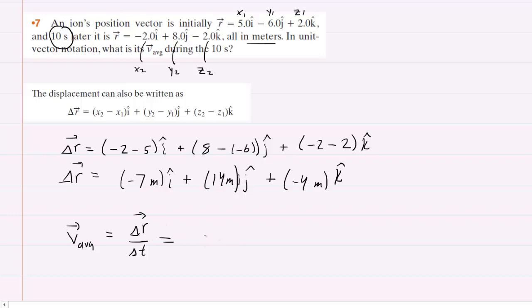So basically we're just going to take all of our displacement values and divide by 10 seconds. So we'll have negative 7 meters divided by 10 seconds, this will be in the i-hat, plus 14 meters divided by 10 seconds j-hat, plus negative 4 meters divided by 10 seconds k-hat.